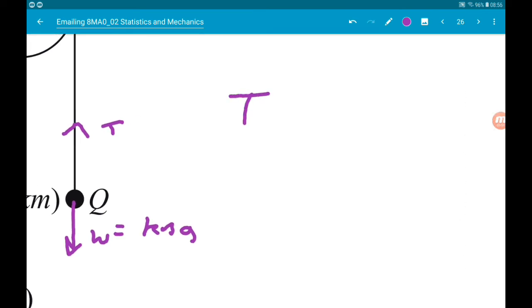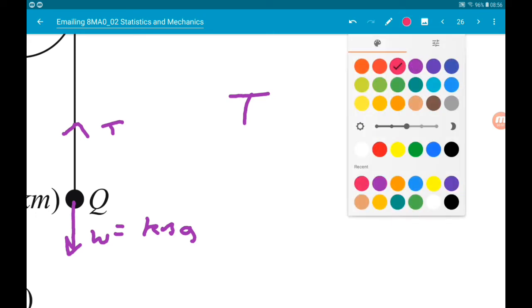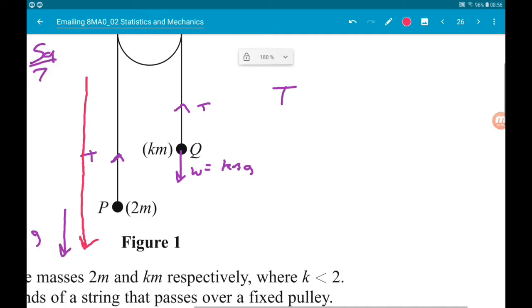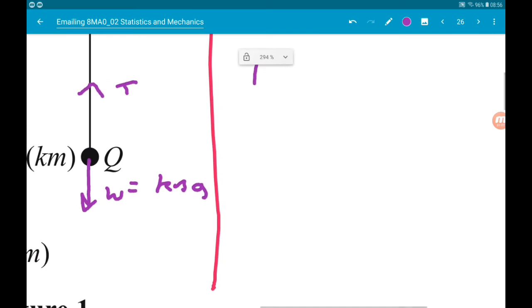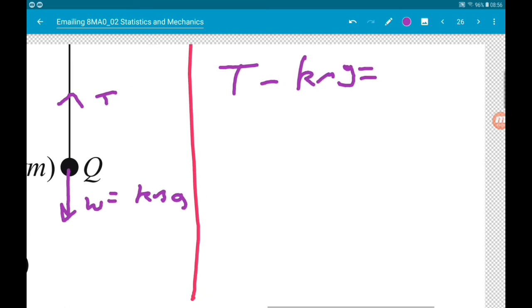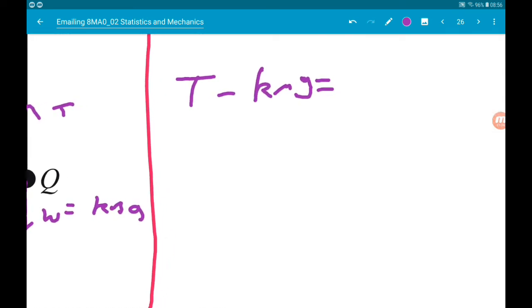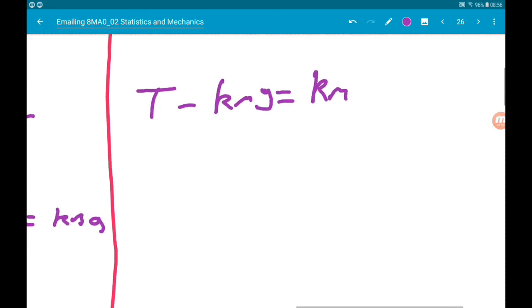So we know over here then that tension, remember tension is winning, so we are moving upwards overall. Tension minus weight, so minus KMG is equal to again mass times acceleration. So tension minus KMG is equal to KM times 5G over 7.